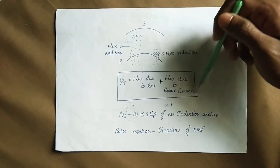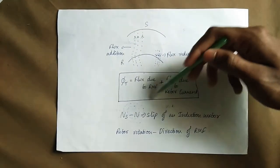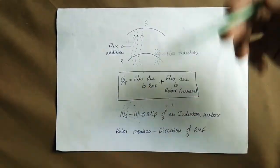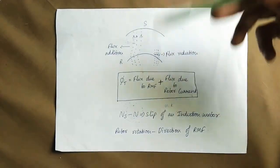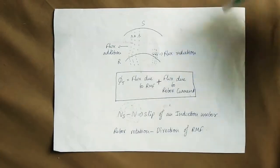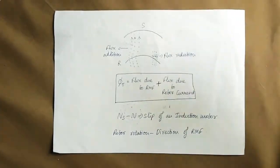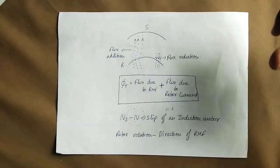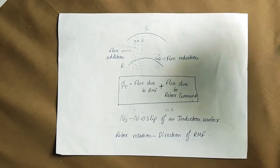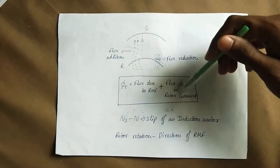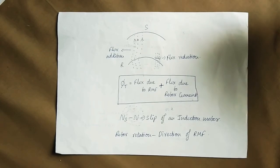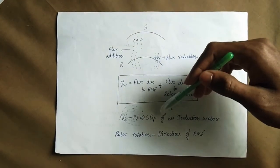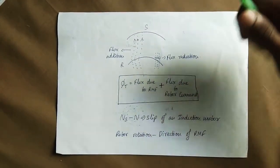The two fluxes produce an induced current. The current flow is the same as the rotor current. In terms of the focus, the torque will correspond to the operation of an induction motor — from the perspective of risk, the torque corresponds to the induction motor's output.